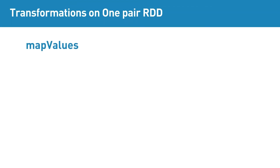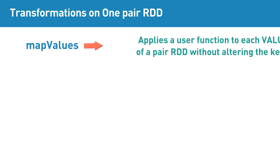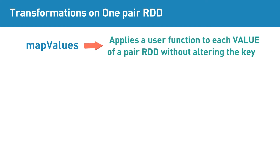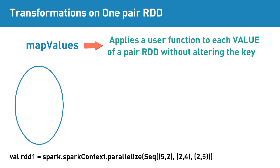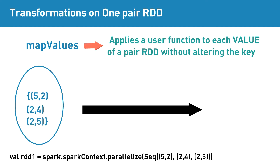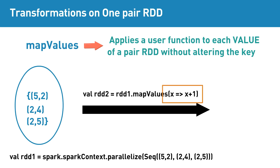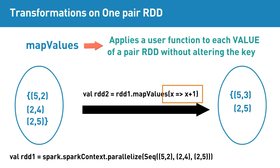mapValues is a pair RDD transformation that applies a user function to each value of a pair RDD without altering the key. For example, if the input RDD contains elements (5,2), (2,4), (2,5), then passing the increment function to mapValues transformation will return (5,3), (2,5), (2,6) as the resultant RDD. Here the values of each key are incremented by 1, and the key is unaltered.